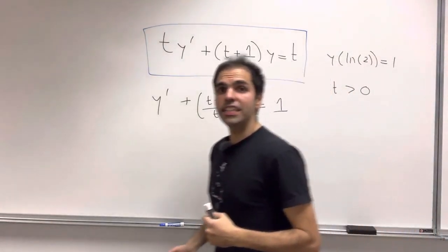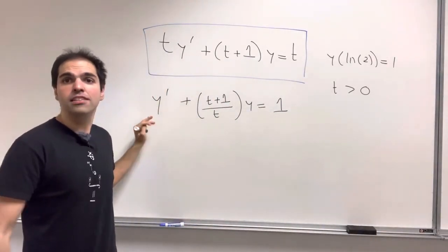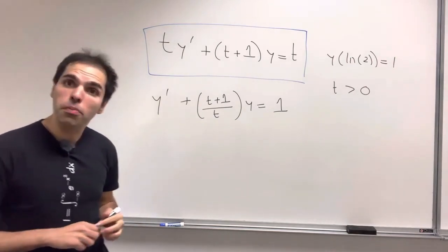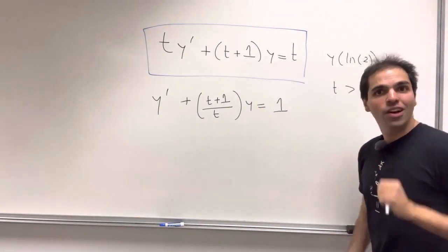And what's the idea behind integrating factors? You want to multiply this by a clever function in order to turn the left-hand side into the product rule. What is this clever function?